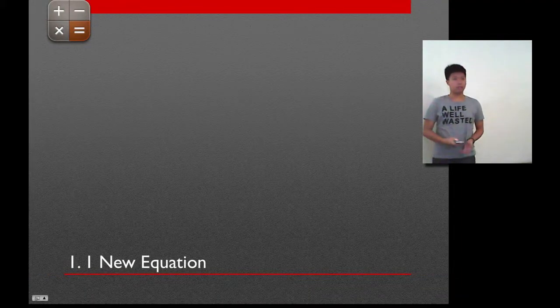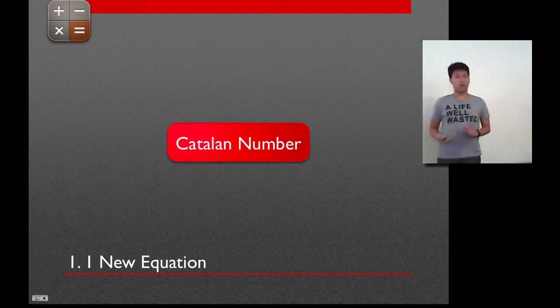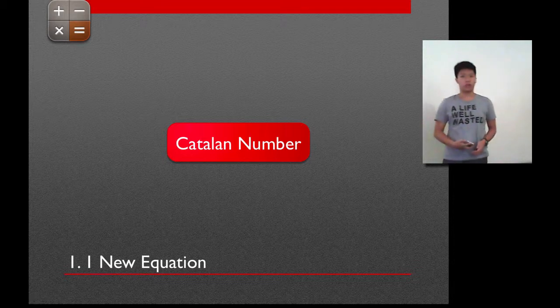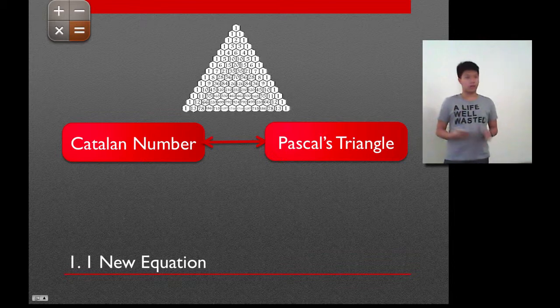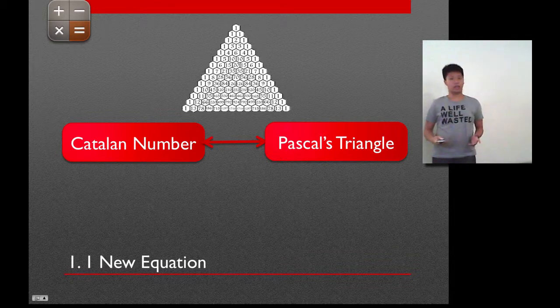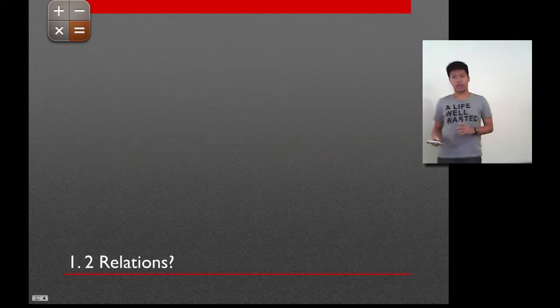I'm going to explain more about the equation that I found first. So, the Catalan number is a combinatorial number, which, as every other combinatorial number, has a strong relationship with Pascal's triangle. Now, the Pascal's triangle has relationships, but what are they?